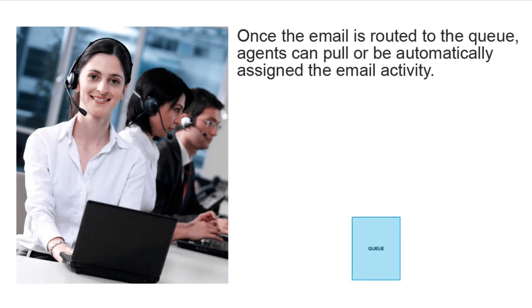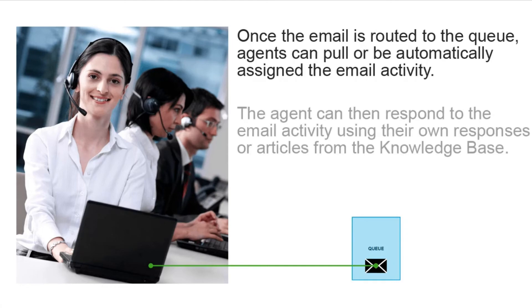Once the email is routed to the queue, agents can pull or be automatically assigned the email activity. The agent can then respond to the email activity using their own responses or articles from the knowledge base.